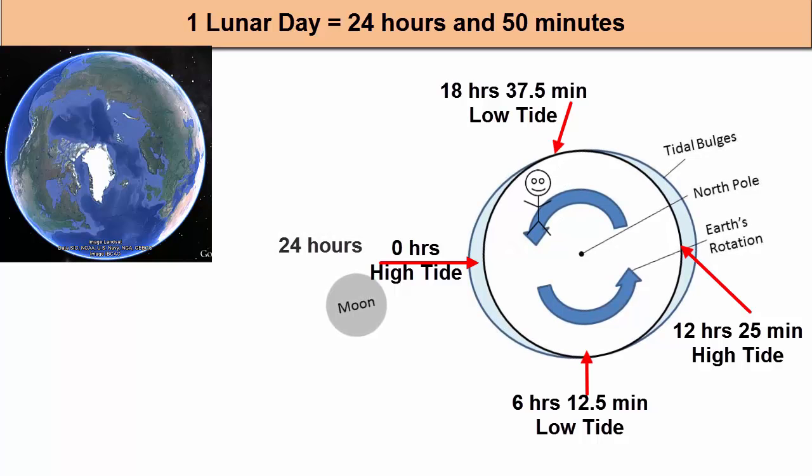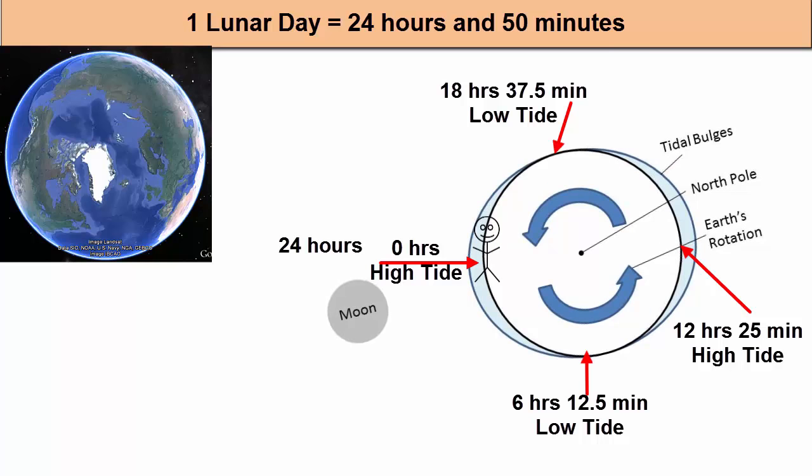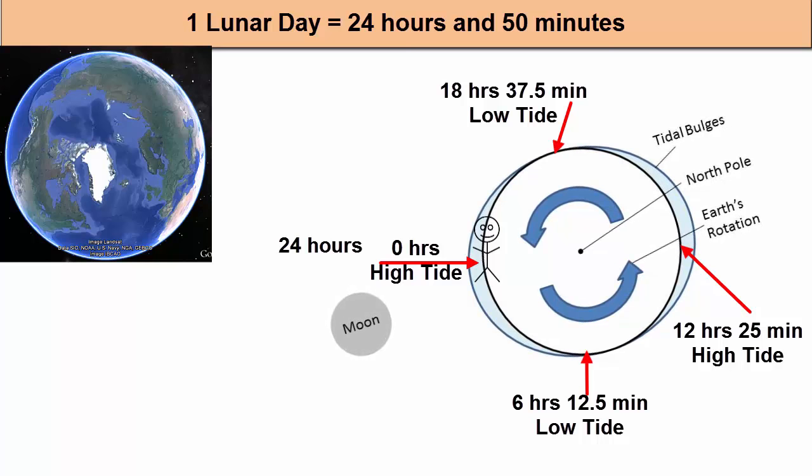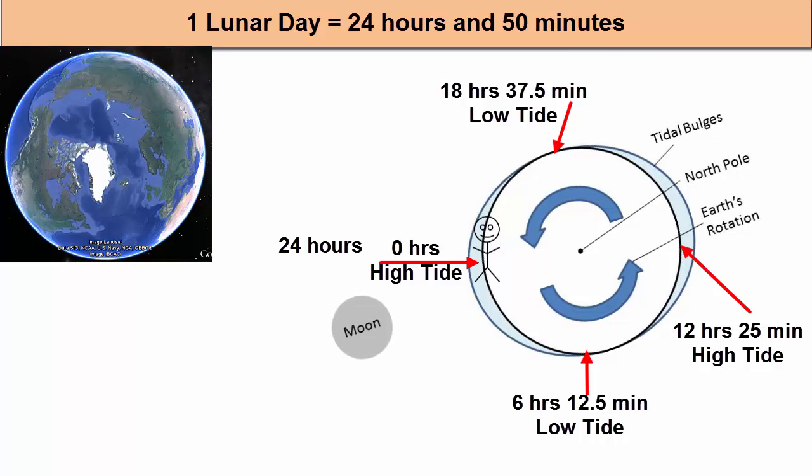18 hours and 37.5 minutes later, the figure has left the high tide and is experiencing low tide again. 24 hours later, the figure is back where it started relative to the Sun, but the Moon has been moving during Earth's rotation. The Moon has moved 1/29th of its full orbit. The bulges have moved with it, so the figure needs to rotate another 50 minutes to meet back up with the bulge.